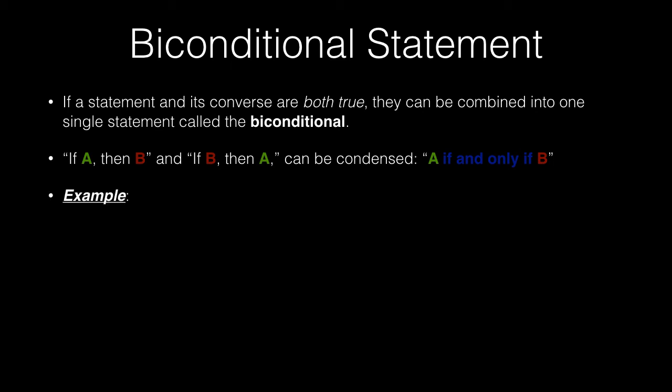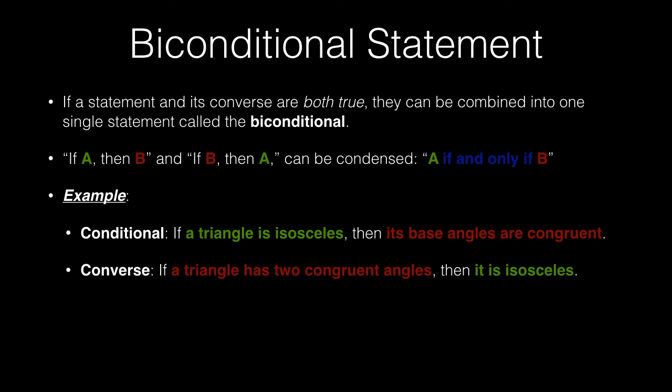So the example for us here. The conditional statement: if a triangle is isosceles then its base angles are congruent. The converse: if the triangle has two congruent angles then it's isosceles. And so then the biconditional takes that statement and condenses it. It says a triangle is isosceles if and only if the base angles are congruent.